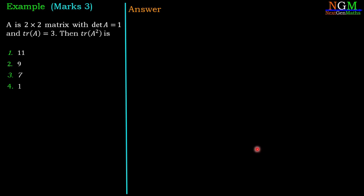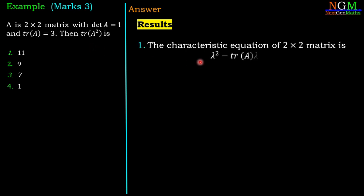This is a problem of trace of A². We are going to use some results associated with the trace. The first result: the characteristic equation of a 2×2 matrix is λ² − trace(A)·λ + det(A) = 0.